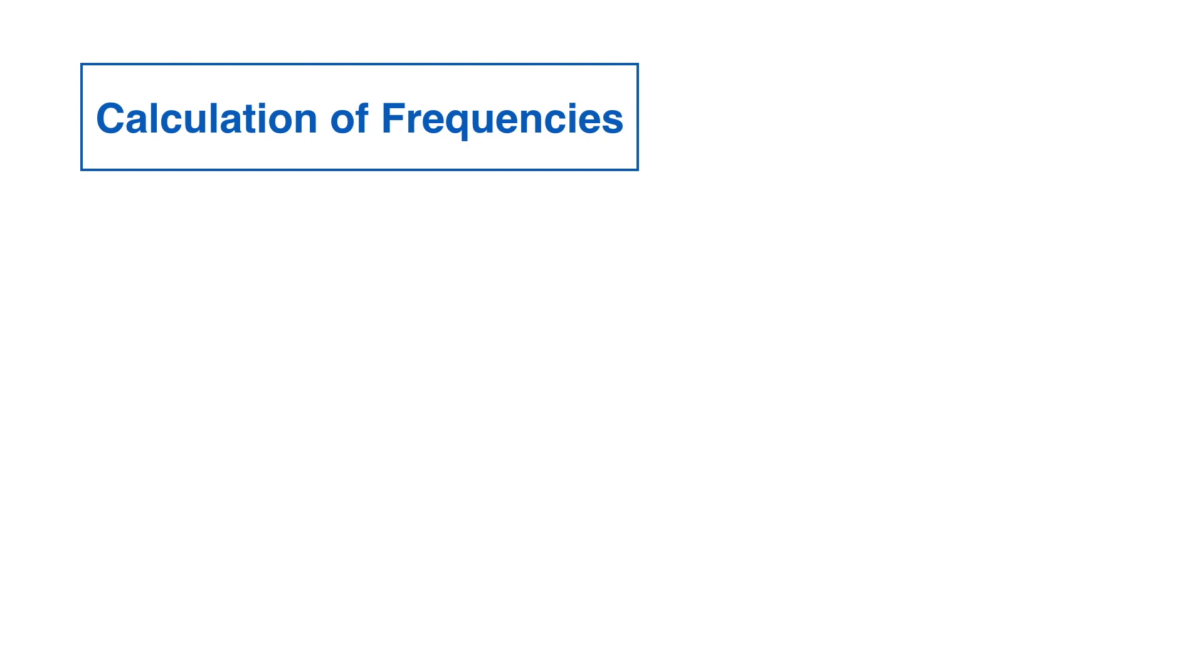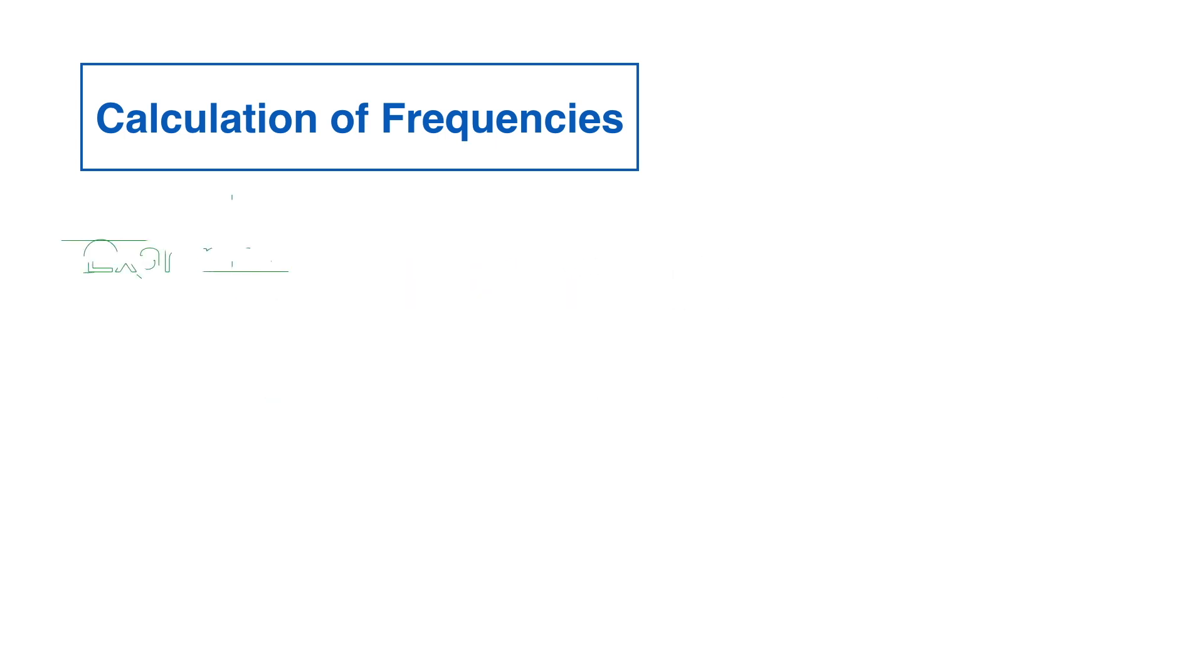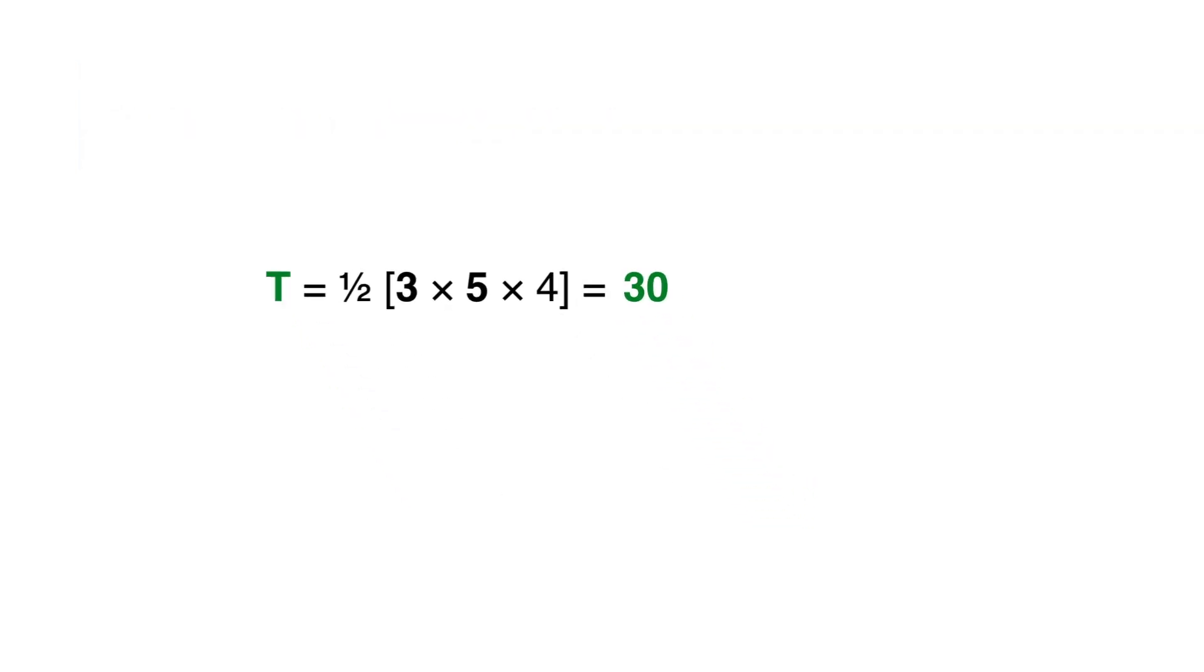In order to calculate the frequency of each pair, each number in the previous matrix is to be divided by the total number of possible pairs, which is given by this formula. In our example, this formula gives 30 possible pairs.